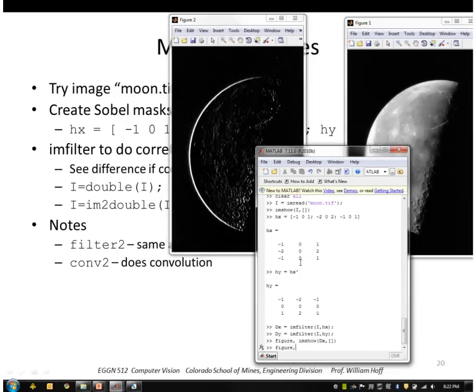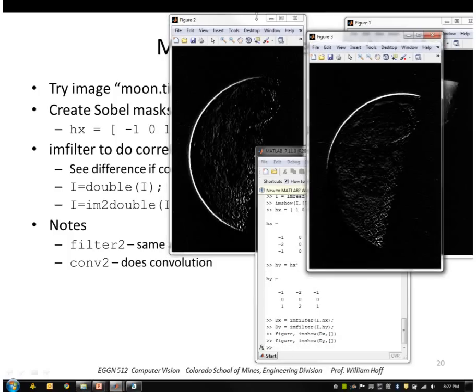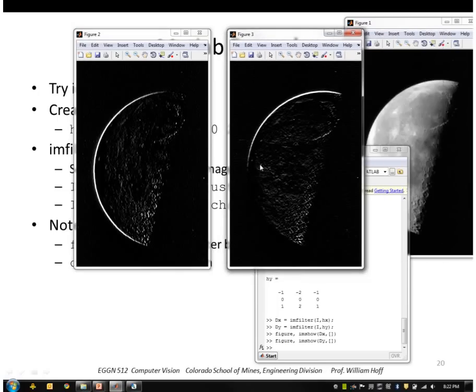Okay, so this is the result of correlating the image with DX, gets the X derivative, and this is the result of correlating the image with Y to get the Y derivative. So the X looks about right, but the Y, I would expect to see values along the lower edge of the moon here, okay, but we're getting nothing, we're getting zeros.